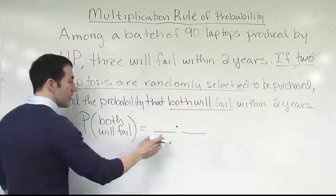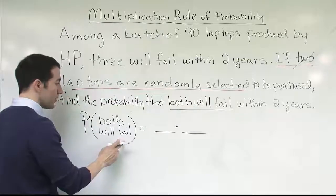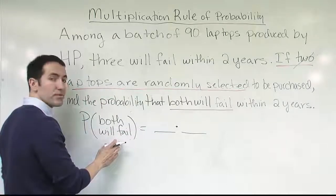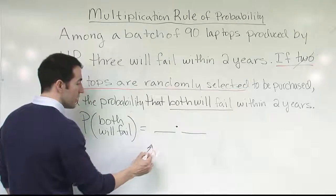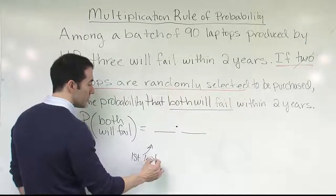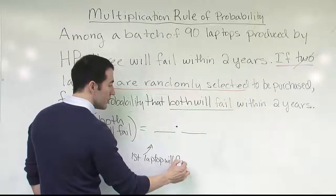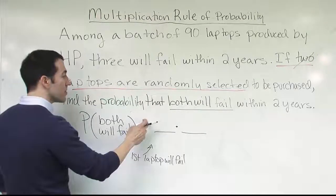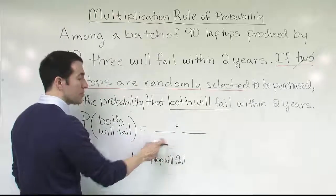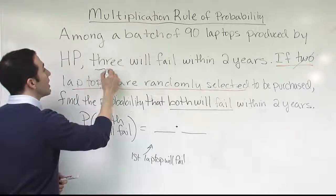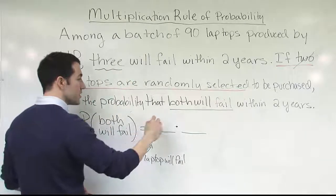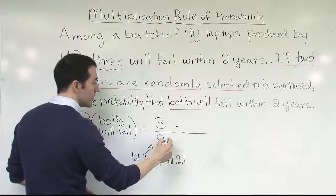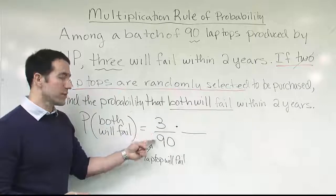What does the first fraction represent? I want to find the probability that both laptops fail within two years, so this fraction represents the probability that the first laptop will fail. That's basic probability: the number of laptops that will fail within two years divided by the total number of laptops on the shelf. Three laptops will fail within two years, so there are 3 defective laptops divided by 90 total laptops. The initial probability of getting a laptop that will fail is 3 over 90.